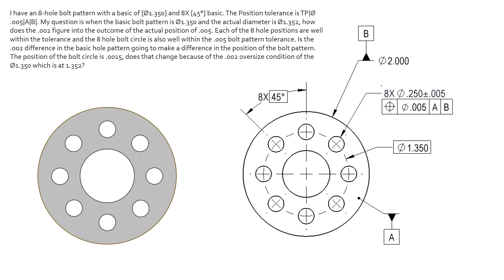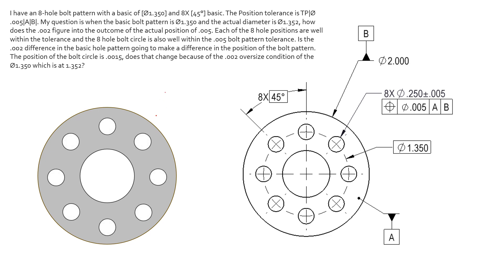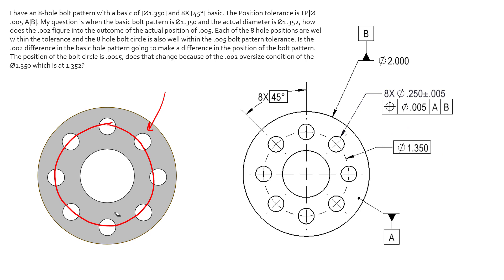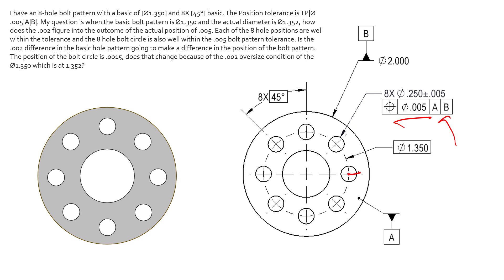The question started out saying the bolt circle diameter, nominally at 1.350, actually came in at 1.352 — so a little bit bigger in diameter than the nominal position, and that's fine. That's not actually anything being controlled here; there's no size tolerance telling us how large or small this bolt circle diameter can be. We can do some math to understand how big this position will allow it to be.